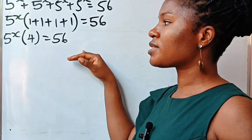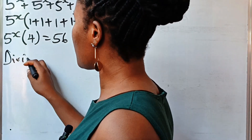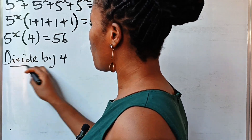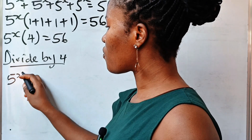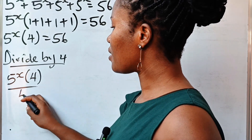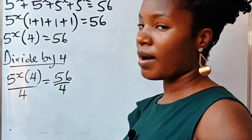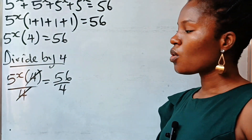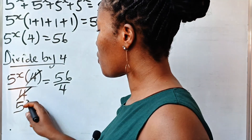Now let's divide both sides of this equation by 4. So if we do that, we have 5 to the power of x, multiplied by 4, divided by 4, is equal to 56 divided by 4. Now 4 divides itself and we have 1. 1 times 5 to the power of x will give us 5 to the power of x.